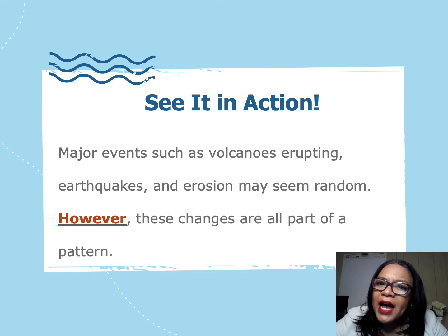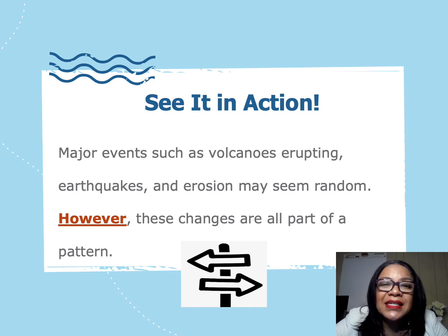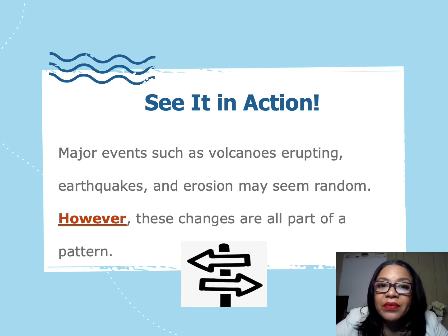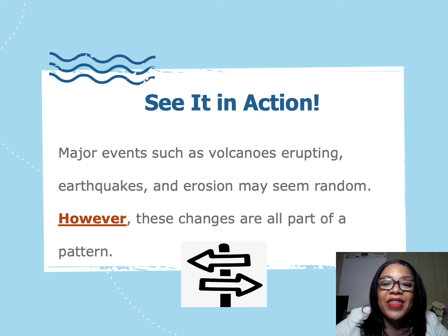So, how did I use the transition word to connect these two ideas? These two sentences are connected by the fact that they show opposite ideas. It seems like these events are random, but they are actually part of a pattern. I know the word however can be used like the word but because it shows a change in direction. So I used the change of direction transition word, however, to start that second sentence.